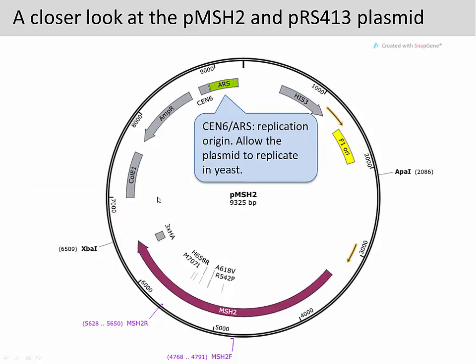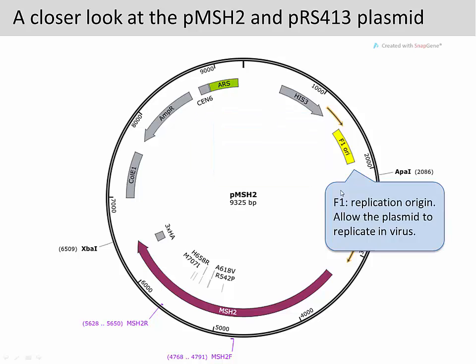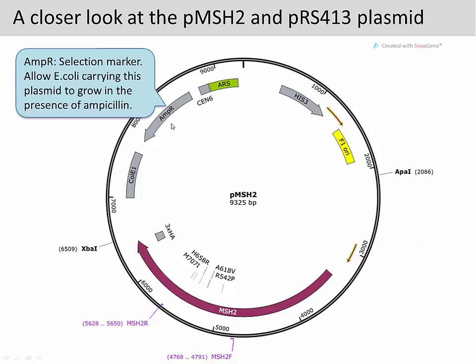The plasmid also has a replication origin that allows replication in yeast, as well as replication in a virus. Over here, we have an ampicillin-resistant gene, which is the selection marker. It allows the E. coli carrying this plasmid to grow in the presence of ampicillin, which is an antibiotic.